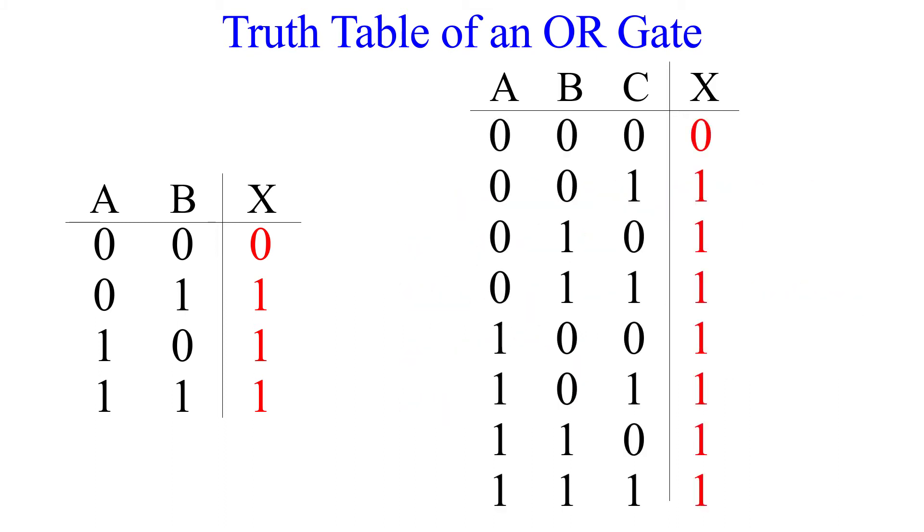Okay, here is the correct truth table. I have given the inputs the variables A, B, and C. To ensure all possible combinations are being represented, the first row starts with binary 0 and counts up row by row to binary 7 or 111. The only output that is low in the whole truth table is the first combination of 0, 0, 0.